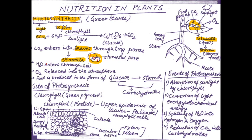The second requirement is water. Water enters into the plant through soil. The end products are glucose and oxygen. Oxygen is released into the atmosphere and is used by animals for the process of respiration. Food is produced in the form of glucose, and glucose is converted into starch.